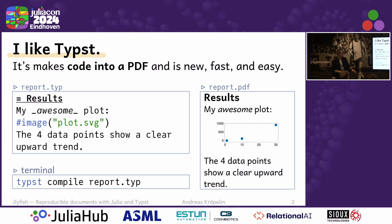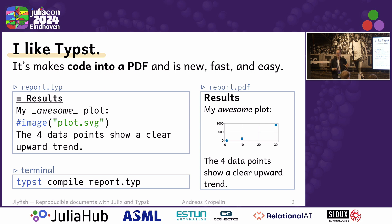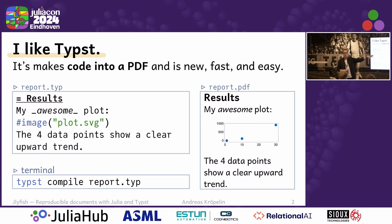Maybe I can convince you why this is a good idea. In Typst, you have a fairly simple syntax, kind of like Markdown, even for typical typography like titles or emphasis. But at the same time, if you want to do more complex stuff, Typst has a whole built-in scripting language. Whenever you see the hash or pound symbol, this means you're evaluating some code or function and not just regular content. So you can use, for example, the image function, give it some file name, and it will include that image in your document. Then you just head over to the terminal, run the Typst compile command, and you get your nice PDF.